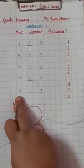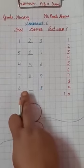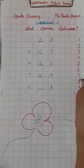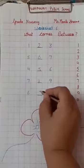What is this? 6. And what is this? 8. What comes between 6 and 8? 7. Write here, 7.